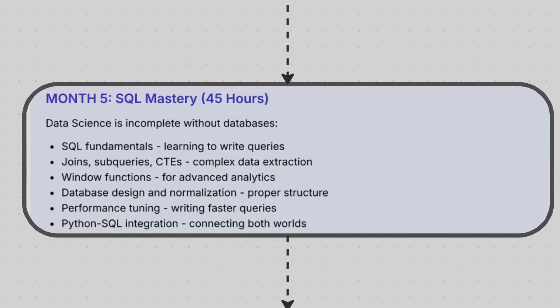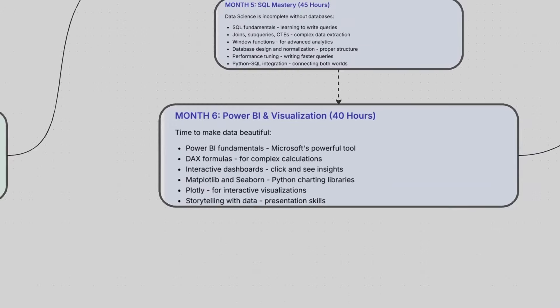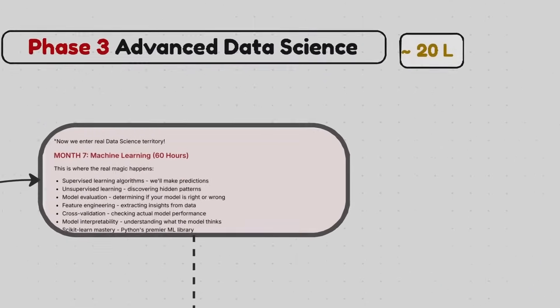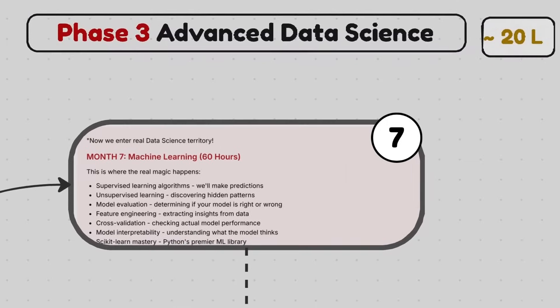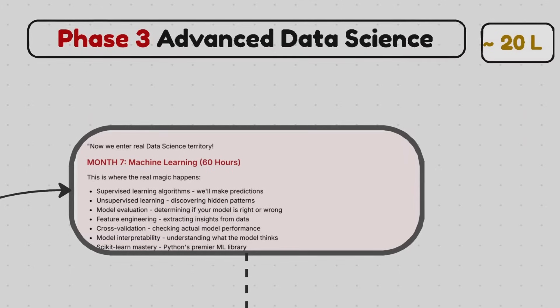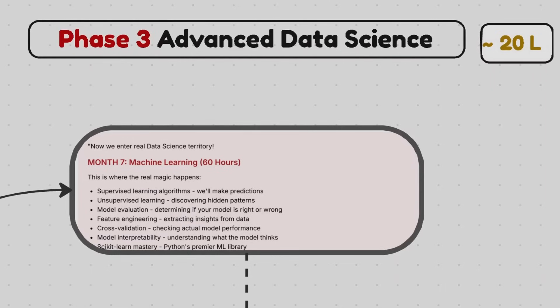Thereafter, we will move on to phase third. Phase third is all about advanced data science. Now we will enter real data science territory. So in the fifth to sixth month, I think machine learning we will be starting and this is the real magic part. We will talk about supervised learning algorithms, unsupervised learning algorithms, model evaluation, feature engineering, cross-validation, model interpretability, and scikit-learn mastery. So these all are the concepts that come under machine learning, and it will go around 30 to 50 hours or something.